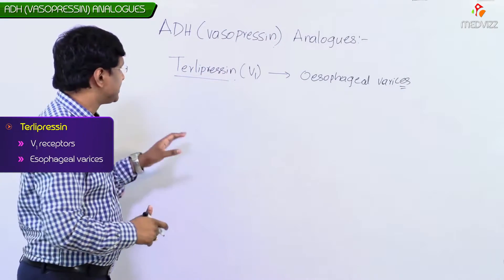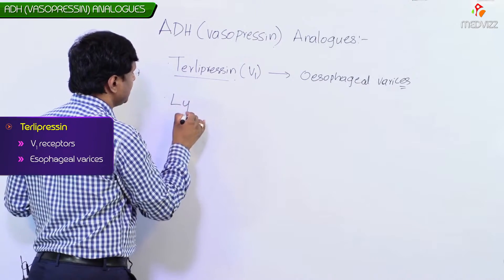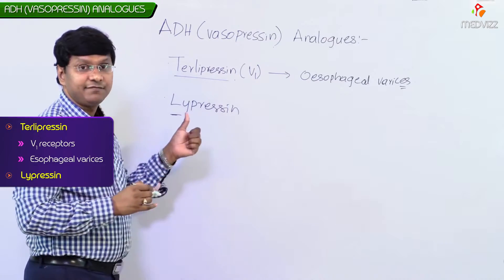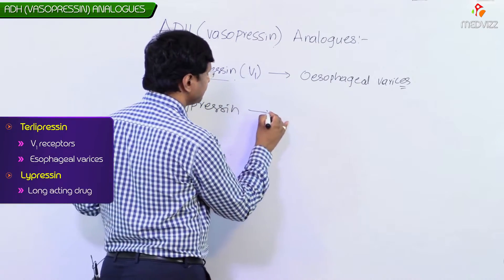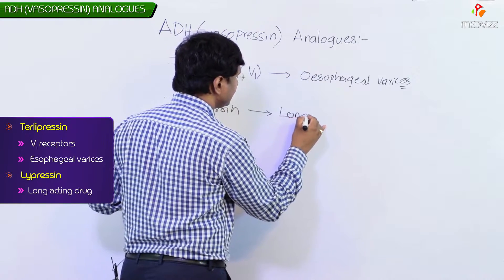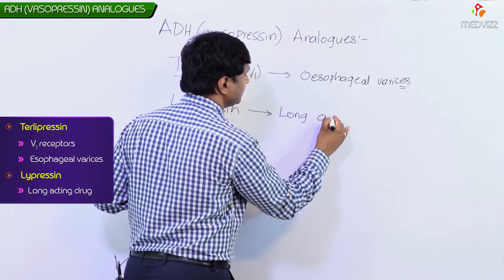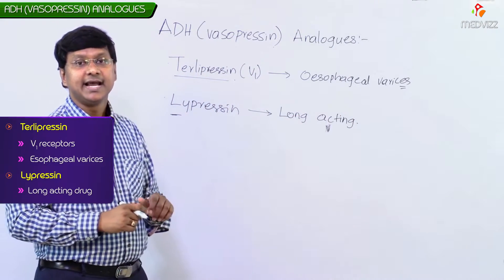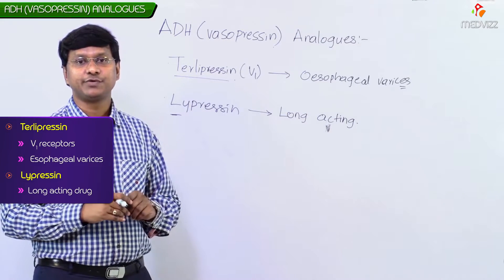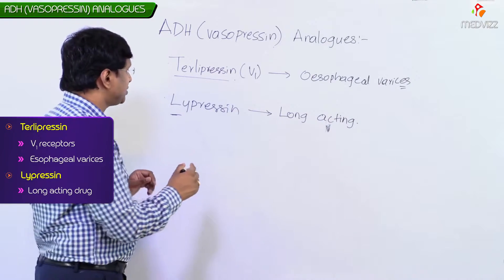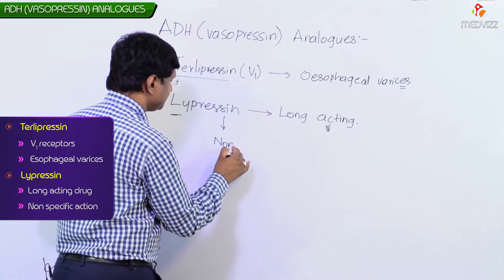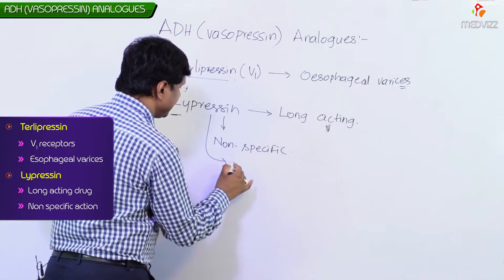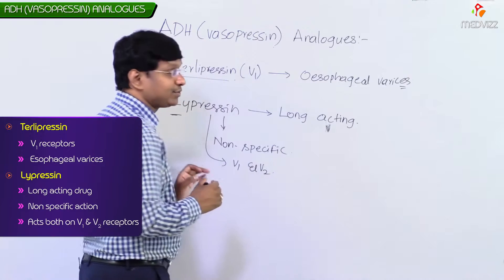Next we have another ADH analogue called Lypressin. Remember: L for Lypressin, L for long-acting. Lypressin has a longer duration of action, but the action of this drug is non-specific — it acts on both V1 and V2 receptors.